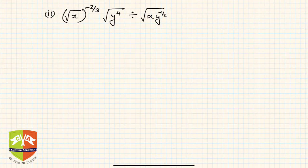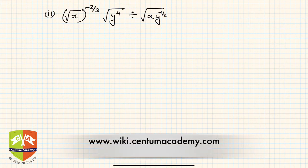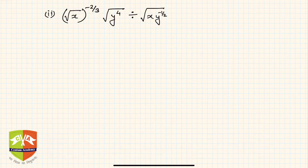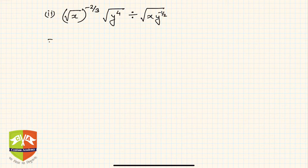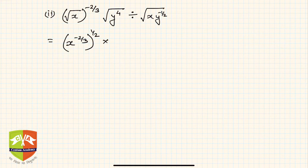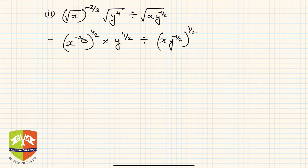Now let's take the next question. It looks complex and a little intimidating, but trust me — once you do three-fourths of such types, you'll be very comfortable solving all of these. The strategy is simple: take each term separately and simplify to the maximum possible extent. The first term is the square root of x to the power minus 2 by 3, whole to the power half; next, y to the power 4 by 2; then divide by x times y to the power minus half, whole to the power half.